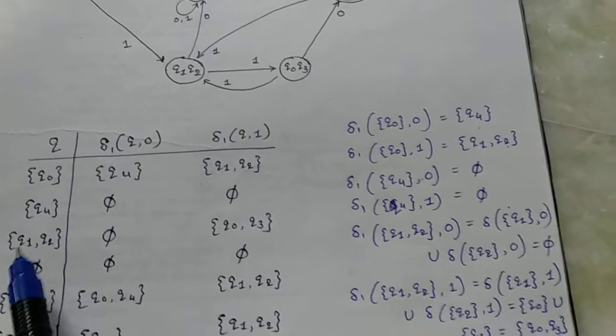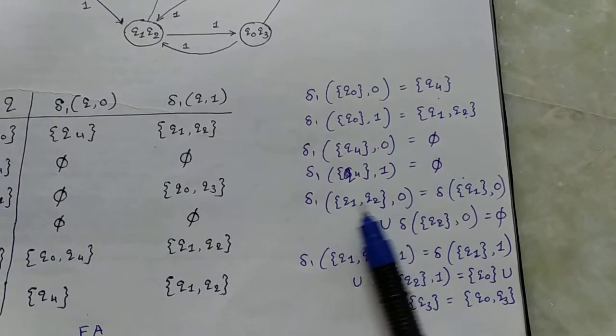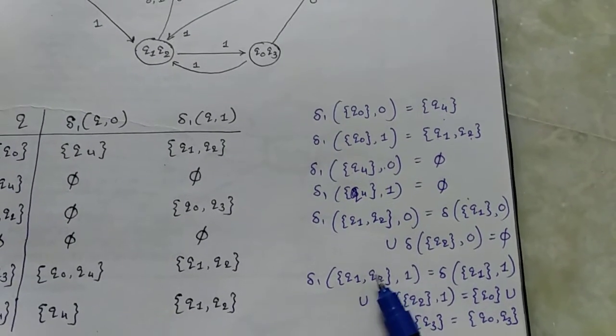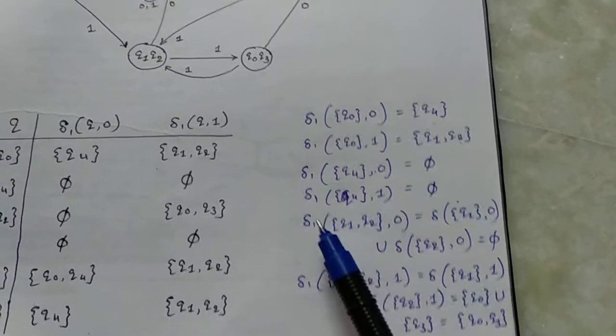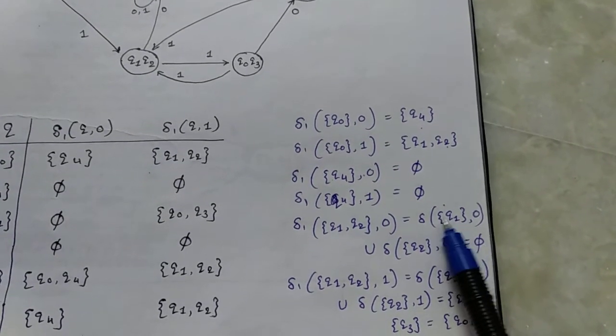Now find q4 to 0 and q4 to 1. q4 to 0 is phi, q4 to 1 is phi. Next new state is q1q2, so q1q2 as an input state. Find subset constructions for q1q2 to 0 and q1q2 to 1.